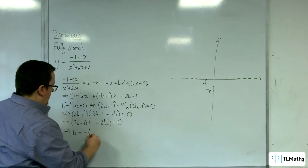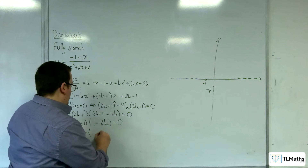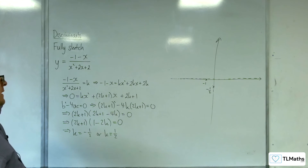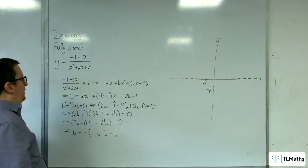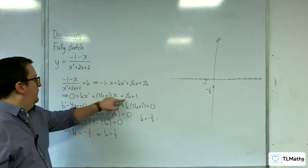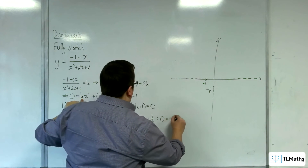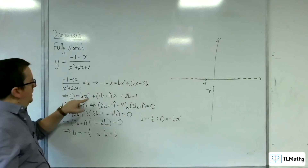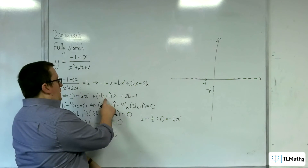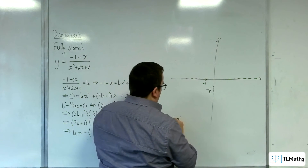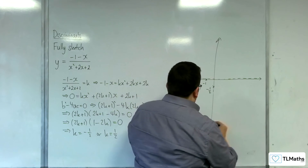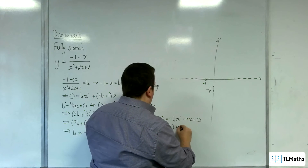So k must equal minus 1 half, or k equals 1 half. When k equals minus 1 half, substituting into the quadratic gives 0 equals minus 1 half x squared plus 0x plus 0, so x equals 0. Therefore (0, minus 1 half) is a stationary point.